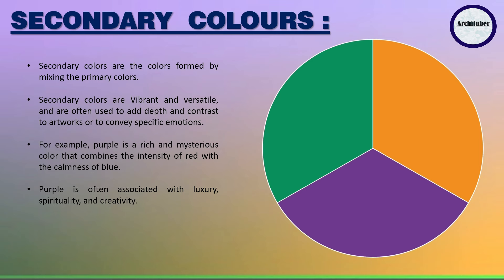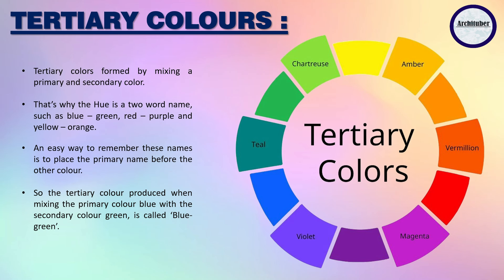Now discussing about tertiary colors. Tertiary colors are formed by mixing primary and secondary colors. Primary colors are red, blue and yellow; secondary colors are green, orange and purple. So tertiary colors come from combining these, like blue and green, red and purple, or yellow and orange. For example, mixing primary blue and secondary green produces blue-green.